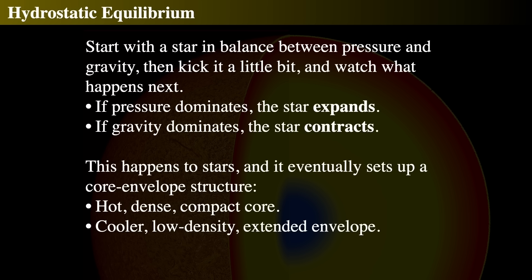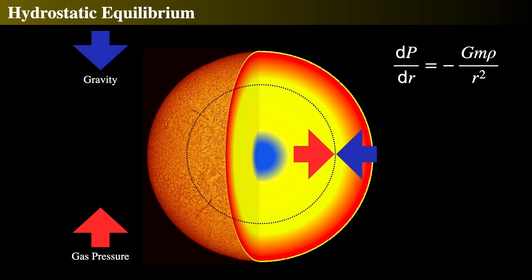So in hydrostatic equilibrium, if you kick the star just a little bit, what happens? If the pressure dominates, the star will expand. If gravity dominates, it'll contract. If it contracts a little bit, the pressure then pushes back and it expands again. So there's this oscillation that gets balanced out in hydrostatic equilibrium. Eventually, as it oscillates between pressure pushing out and gravity pulling in, it settles down. When it settles down, you get a system where the core is very, very hot and very dense and compact, surrounded by a much cooler, much lower density envelope. That's what you get after hydrostatic equilibrium is established inside a star.